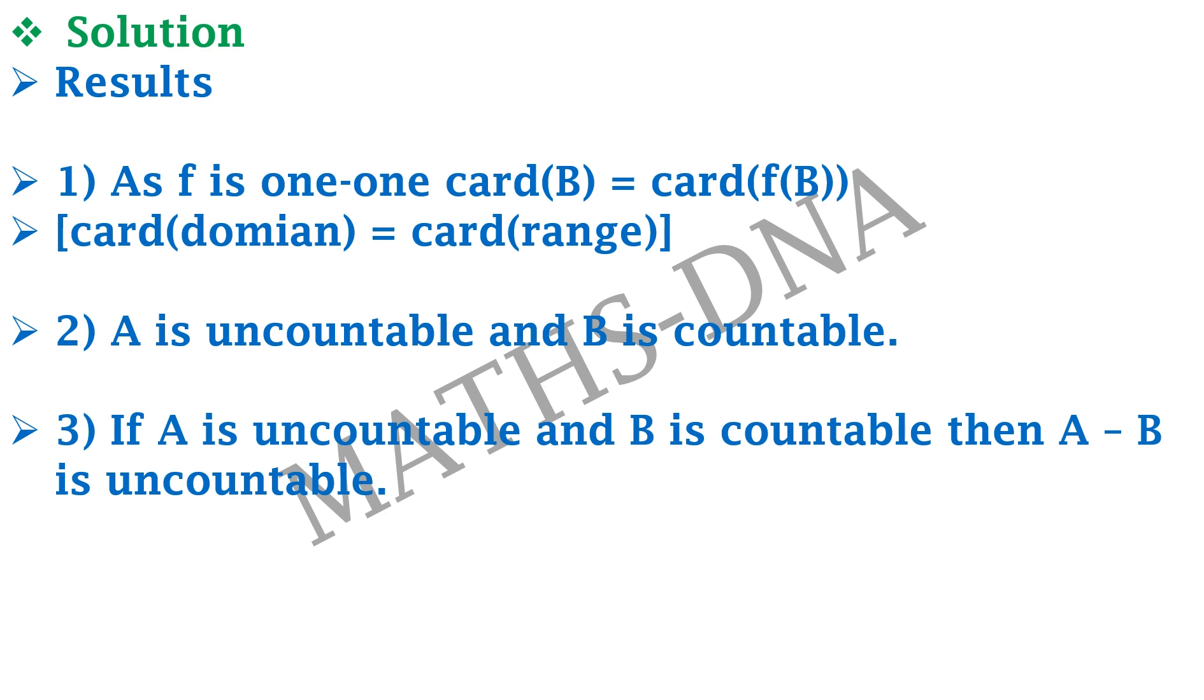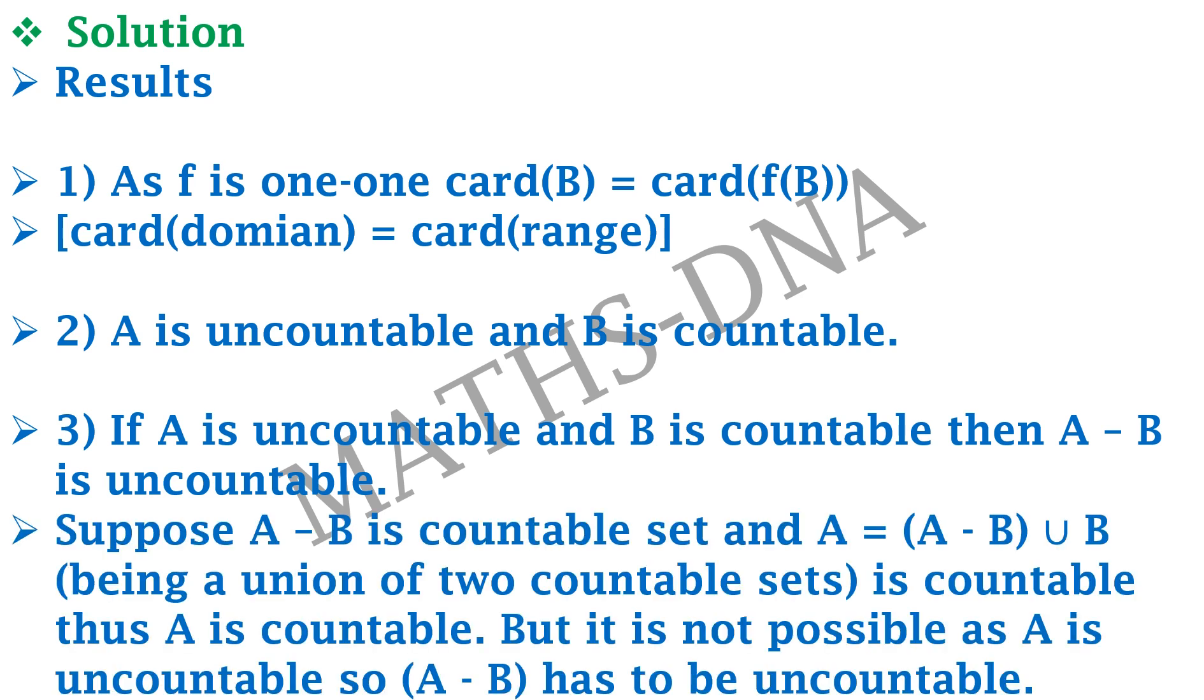The third one: if A is uncountable and B is countable, then A minus B is uncountable. Now how this result comes? Let us prove this result. Suppose that A minus B is countable.